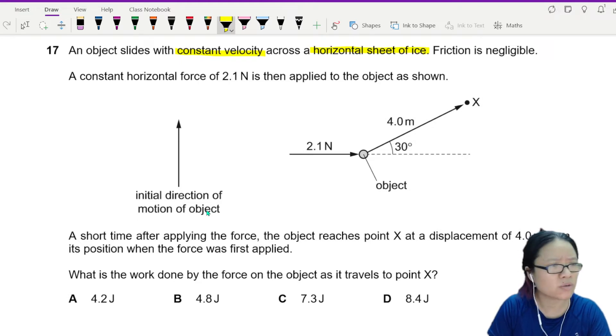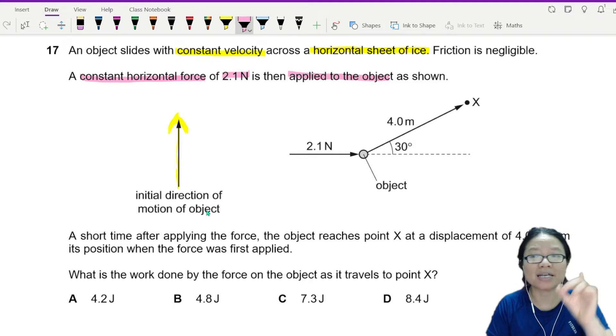So this one, you have an object that is moving vertically up. And then we have a constant horizontal force of 2.1 N is then applied to the object. So the object is moving up, minding its own business and suddenly incoming!